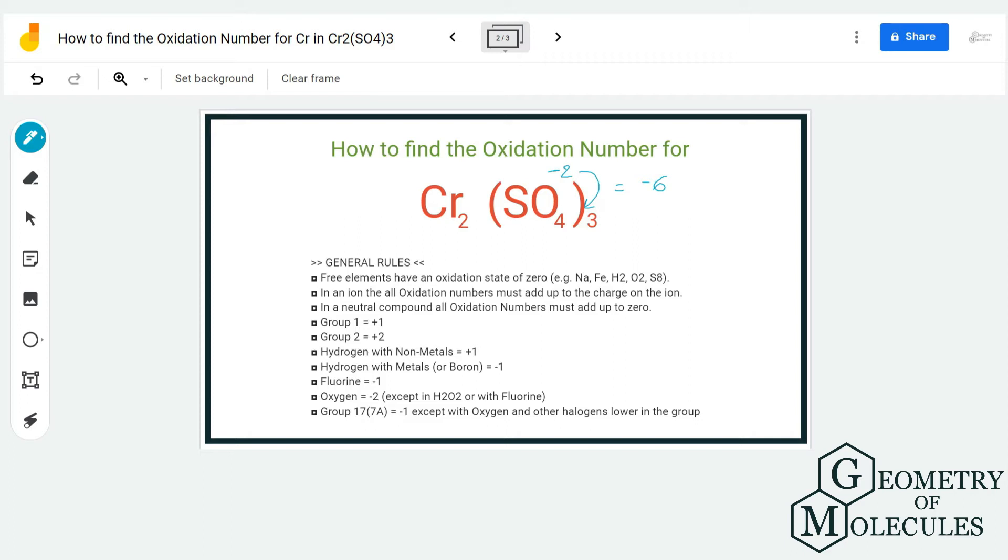As I mentioned earlier, the total charges for this compound is 0. So as it has charges of -6, there will be charges of +6 on chromium. But here also there are two atoms of chromium present, so each chromium atom will have an oxidation number of 3 and hence a charge of +3.